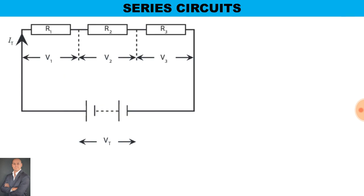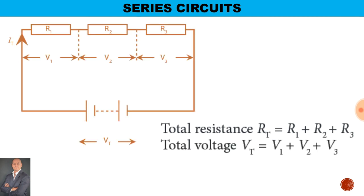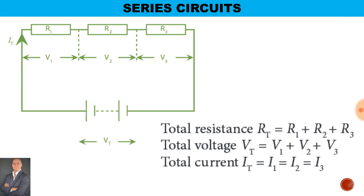For series circuits, to calculate the total resistance it'll be R1 plus R2 plus R3. The total voltage is equal to the sum of the volt drops, and the total current is the same throughout the circuit.